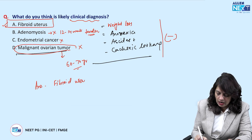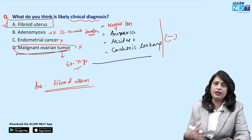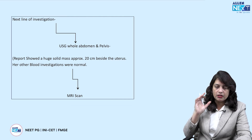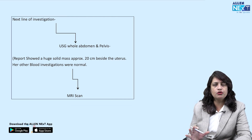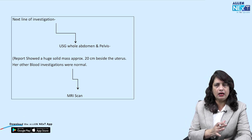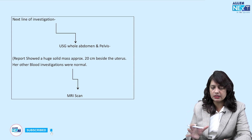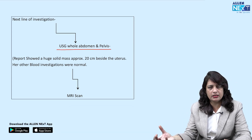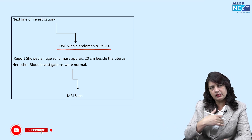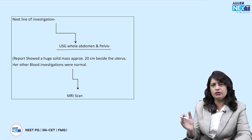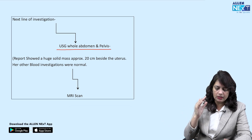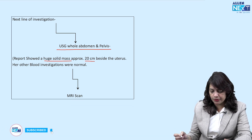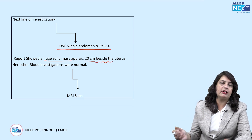Having made a provisional diagnosis of fibroid uterus, the next step is to get investigations done. Apart from routine investigations like hemogram, the most important first-line investigation when suspecting a uterine or adnexal mass is ultrasound of the whole abdomen and pelvis. The whole abdomen is scanned because this mass extends up to the umbilicus, and I also want to assess the bowel and bladder. The report showed a huge solid mass approximately 20 cm beside the uterus, and blood investigations were normal.